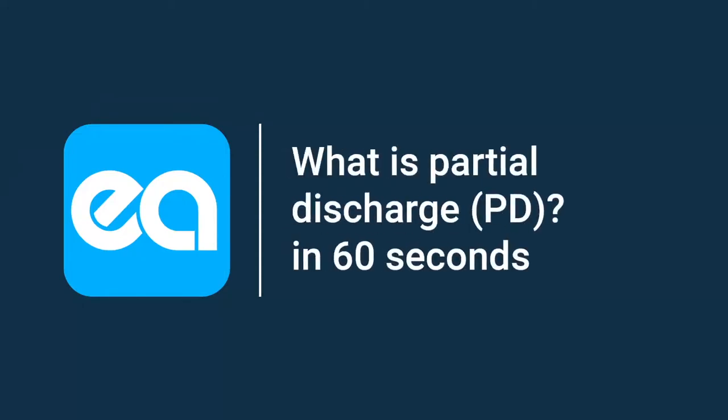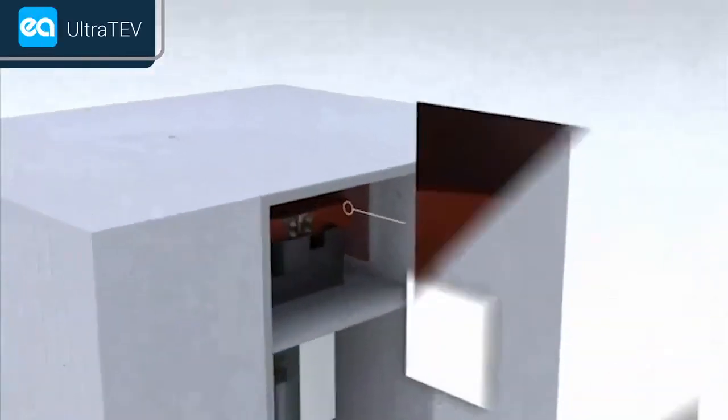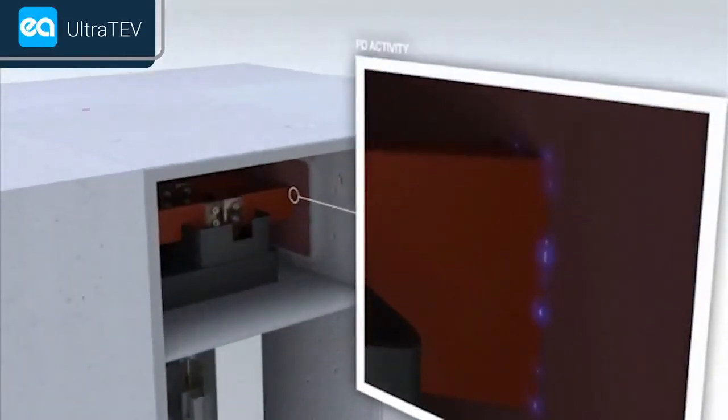What is PD? Partial discharge is an electrical discharge or spark that bridges a small portion of the insulation between two conducting electrodes. We call this PD activity.